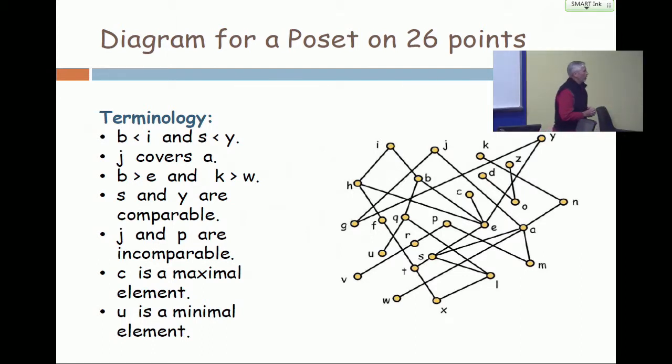Question? People are comparable and incomparable. Okay. Comparable is a notion for two distinct points, and you say that two distinct points are comparable when one of them is bigger than the other. They are incomparable when neither is bigger than the other.